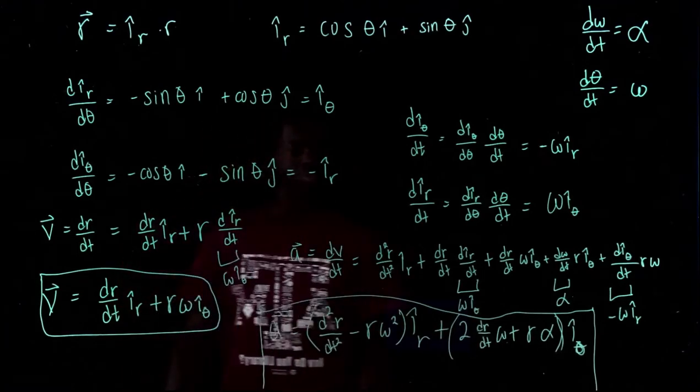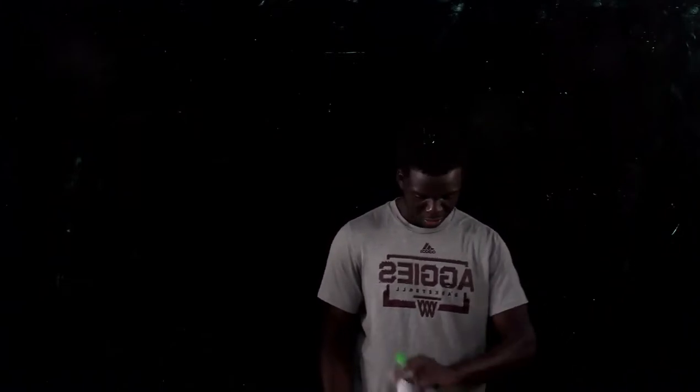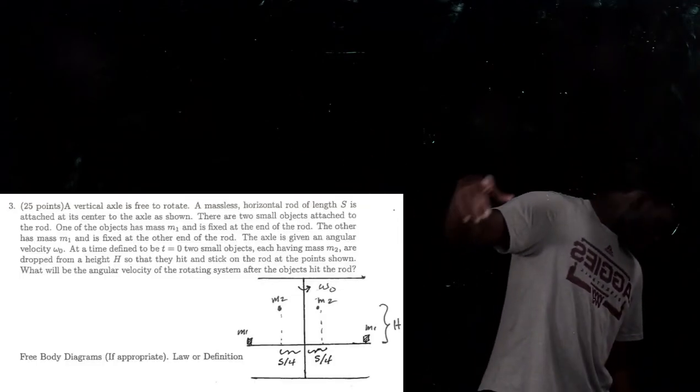I didn't do numbers two and four for 2018 exam three, so there's no work for those. The only other problem I'm going to cover in this video is number three. The question is going to appear on screen — take a screenshot. We're going to find the angular velocity after the object hits the rod.